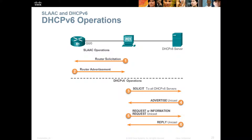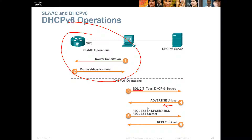For DHCPv6 steps — once PC1 is told to use the DHCPv6 server, it will solicit a response to all DHCPv6 servers. The DHCPv6 server returns an Advertisement as a unicast address. Then the PC sends a Request or Information-Request as a unicast back to that specific DHCPv6 server. Finally, the DHCPv6 server sends a Reply as a unicast. Pretty similar steps to IPv4, but with different message titles.